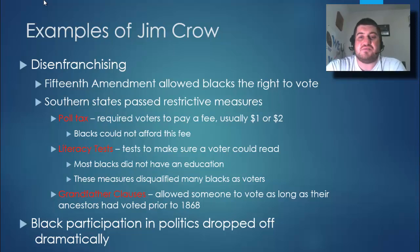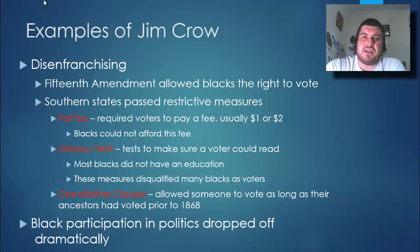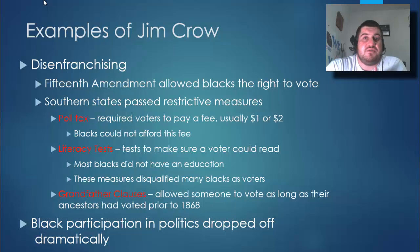They passed restrictive measures, like these three examples of Jim Crow. The poll tax required voters to pay a fee — usually just a dollar or two — but blacks could not afford that. Back then they barely had jobs sharecropping, so they couldn't afford to vote. That was one way to stop them.